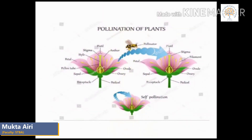Now let us see pollination of plants. Pollination is the process which occurs when pollen grains from the male part of one flower, that is the anther, are transferred to the female part, that is the stigma, of another flower. Insects help in pollination. When they sit on a flower, the pollen dust falls on the pistil and fertilizes it. Once pollination occurs, the fertilized flower produces seeds. These seeds grow into fruits. Fruits contain seeds from which new plants can grow.